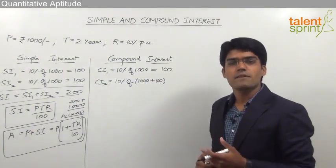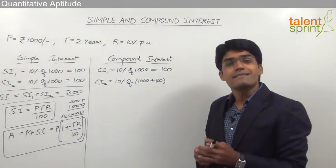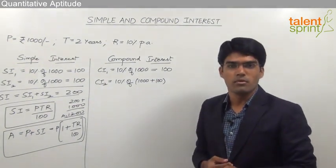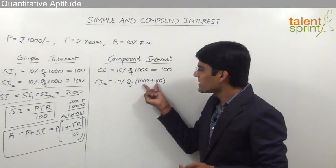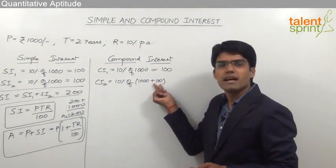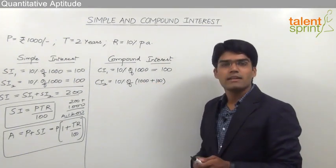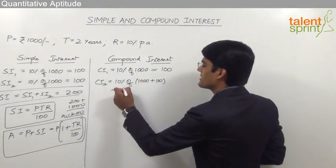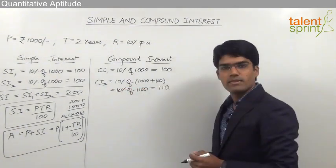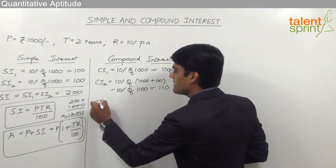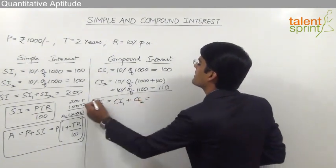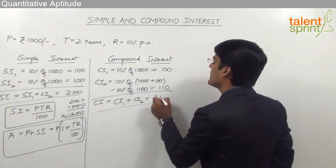In case of compound interest, the interest is not paid on a regular basis — it gets added to the principal amount. So the principal for the second year is the principal of the first year (1000) plus the interest of the first year (100), totalling 1100 rupees. Therefore, CI for the second year is 10% of 1100 = 110 rupees. The total compound interest is 100 + 110 = 210 rupees.